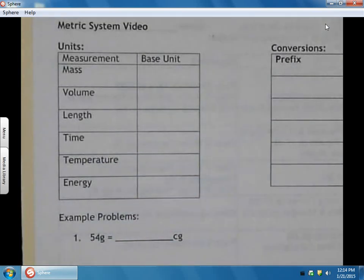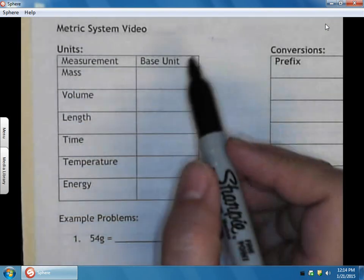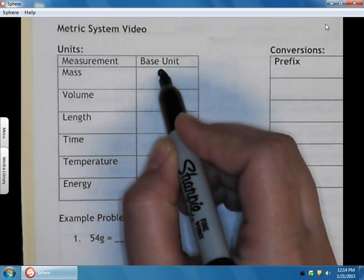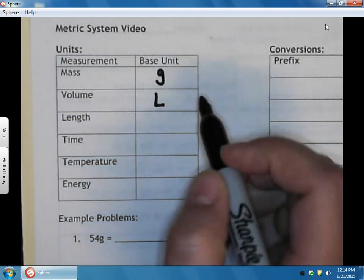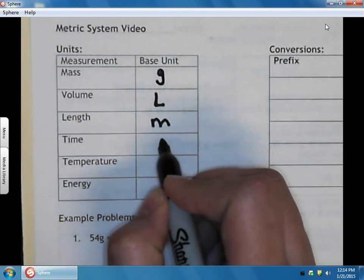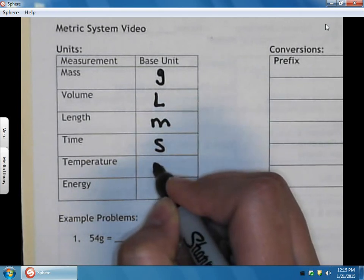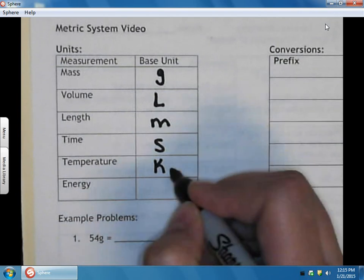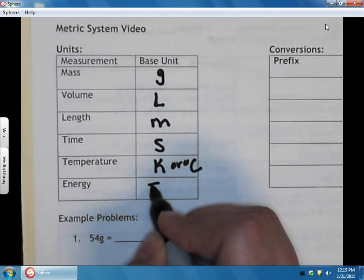All right, today we're going to talk about the metric system. First of all, the units of measurement we're going to be looking at are mass, which is measured in grams, volume in liters, length in meters, time in seconds, temperature in Kelvin or degrees Celsius, and energy in joules.